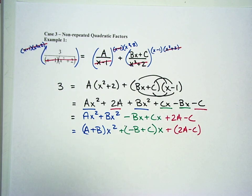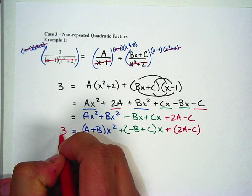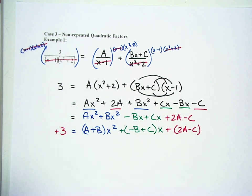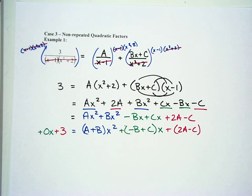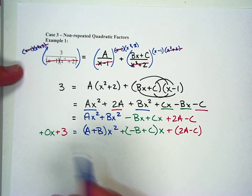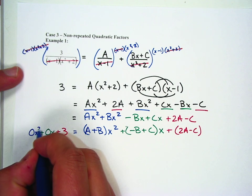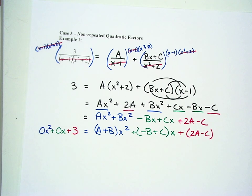So the next step would be to get the x squared out. So we're going to say (A plus B) times x squared. We're going to get the x out here. So we're going to say (negative B plus C)x. And then we have our constant term of 2A minus C. Now over here on the left, we really only have this 3, which is our constant term. We don't have an x term, so it's going to be plus 0x. And we don't have an x squared term, so it's going to be 0x squared.